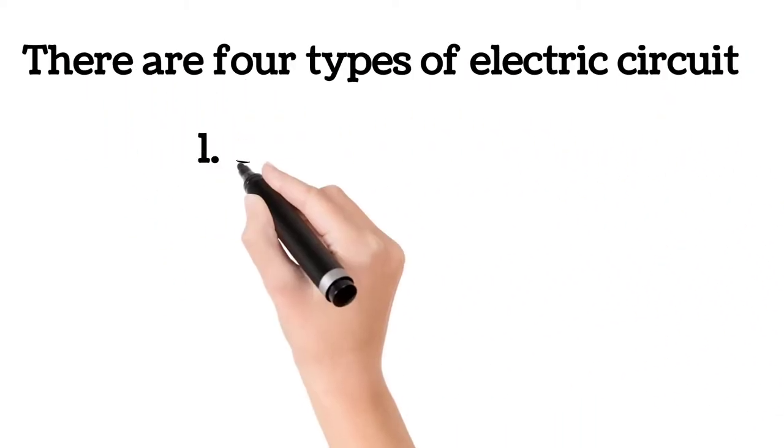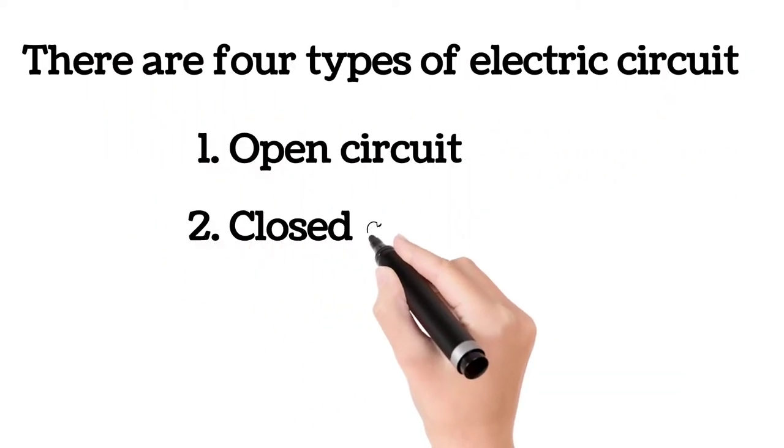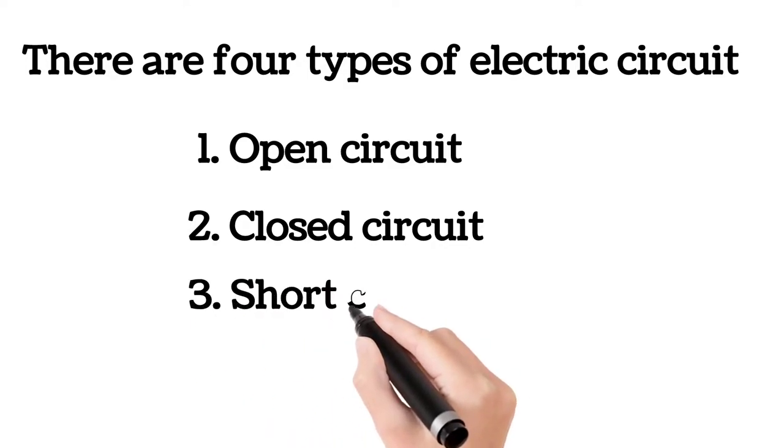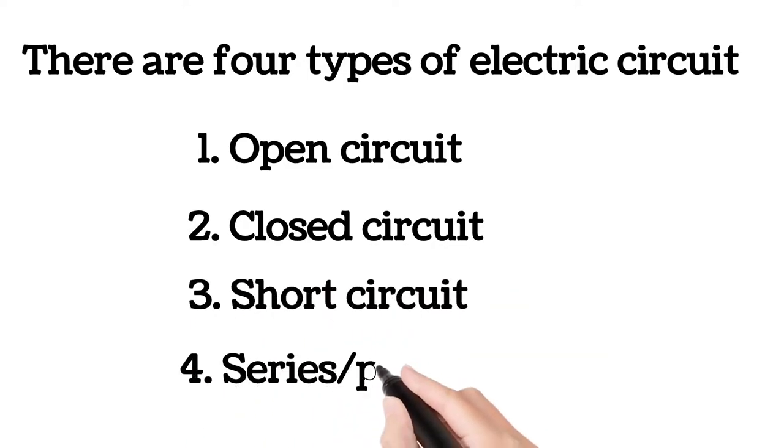There are a total of four types of electric circuits: number one, open circuit; number two, closed circuit; number three, short circuit; and number four, series and parallel circuit.